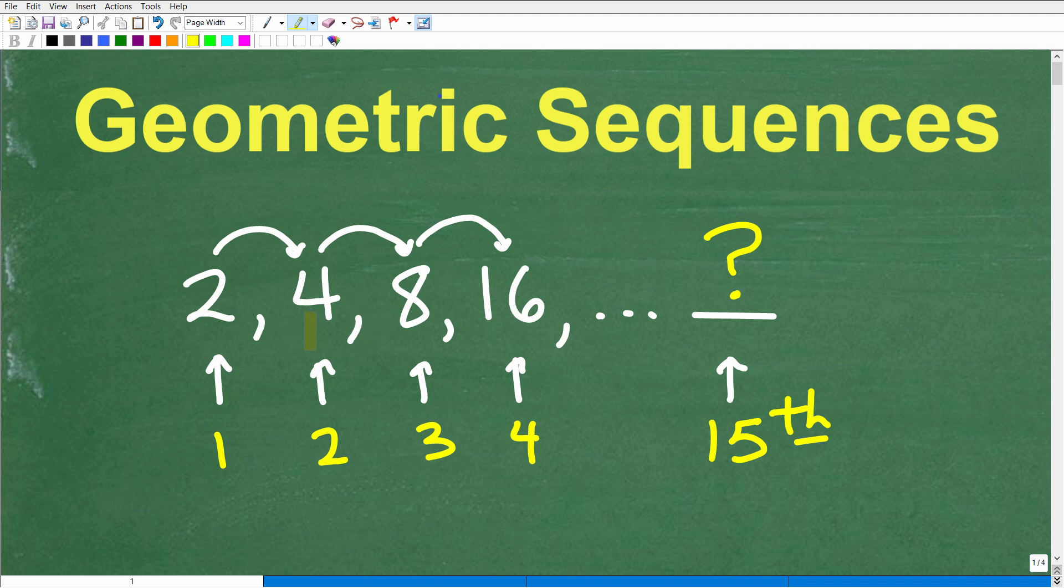I'm not going to tell you exactly what it is right now, but hopefully it's pretty obvious how we go from this number to this number. What's going on in order to get to the next number in the sequence?